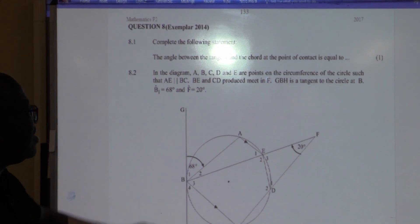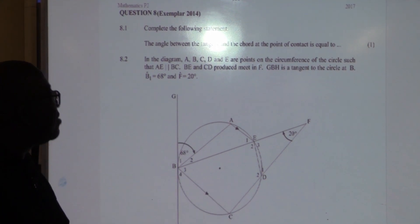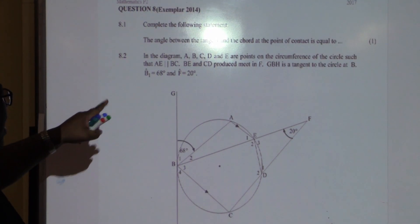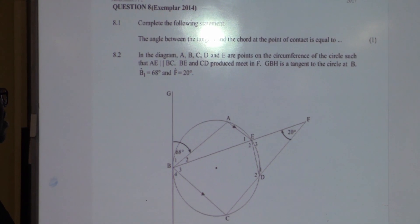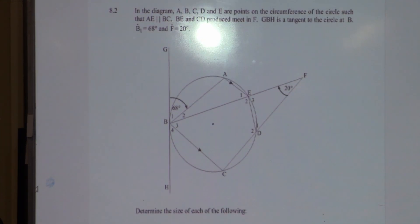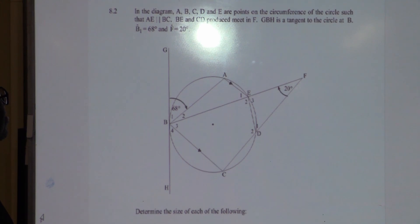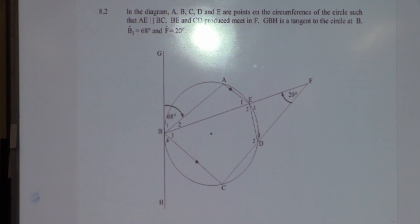And you can see it in the diagram. This is the tangent and this is the chord. In the diagram, A, B, C, D, and E are points on the circumference. In the diagram, A, B, C, and D are points on the circumference such that AE is parallel to BC. That becomes important. AE is parallel to BC.